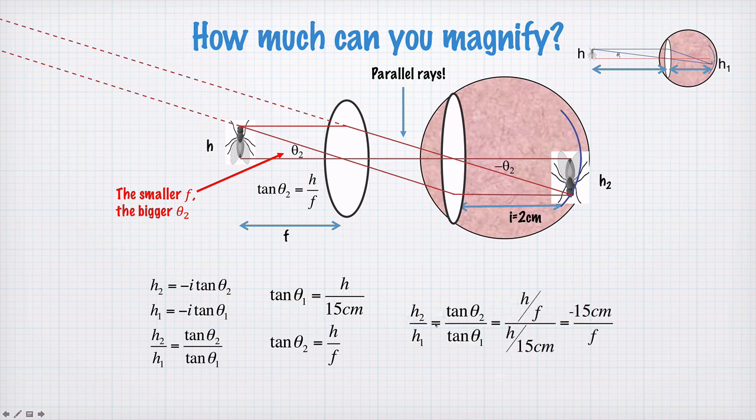So the ratio of h2 to h1 is tan theta2 on tan theta1. Substituting in all the expressions for this, and we get that h2 on h1 is 15 cm on f. And 15 cm comes from the closest you can position something to your eye and still focus on it. Now for small angles, this is equal to theta2 on theta1.